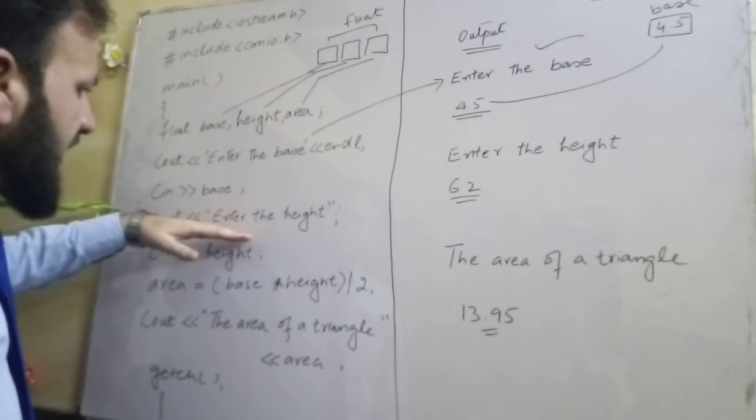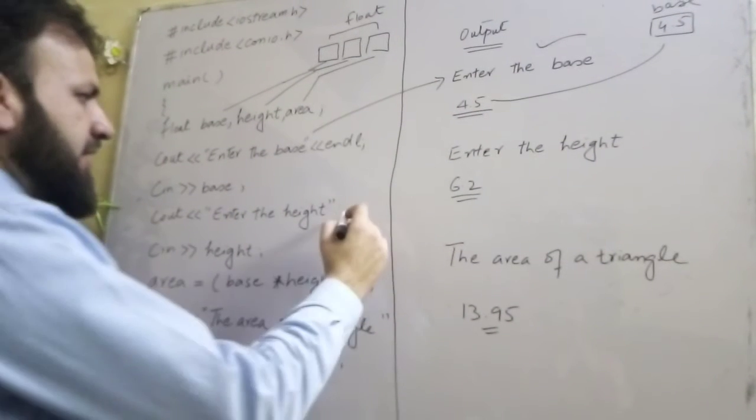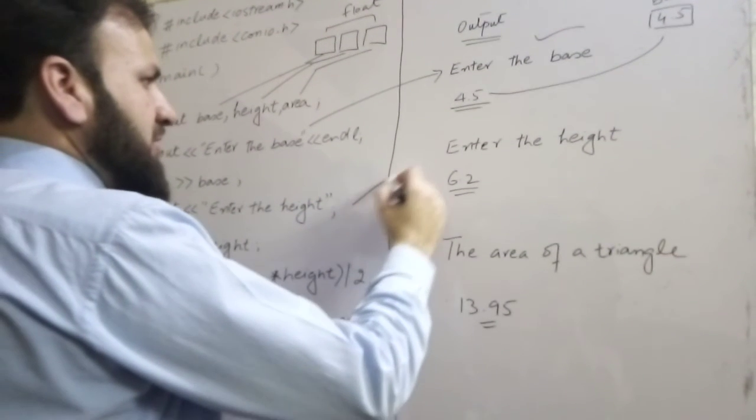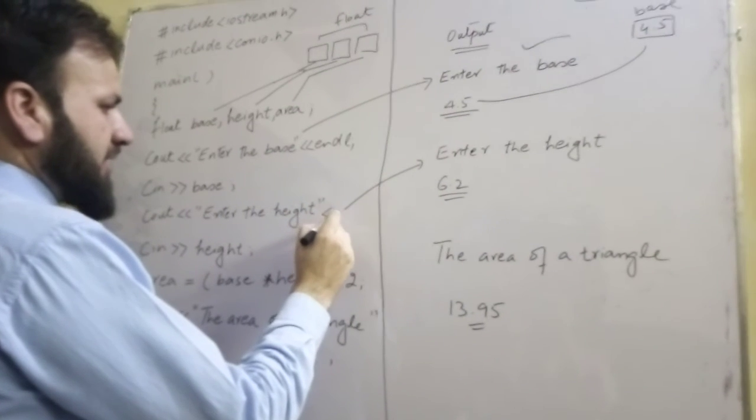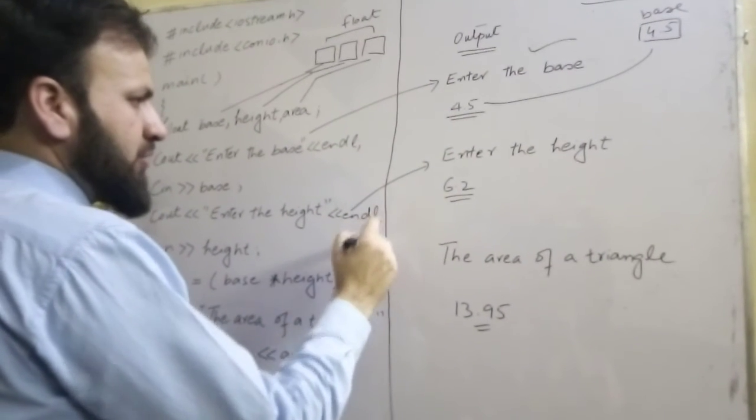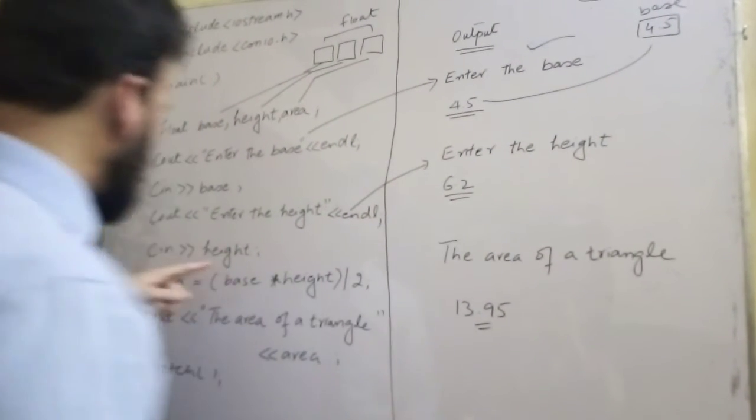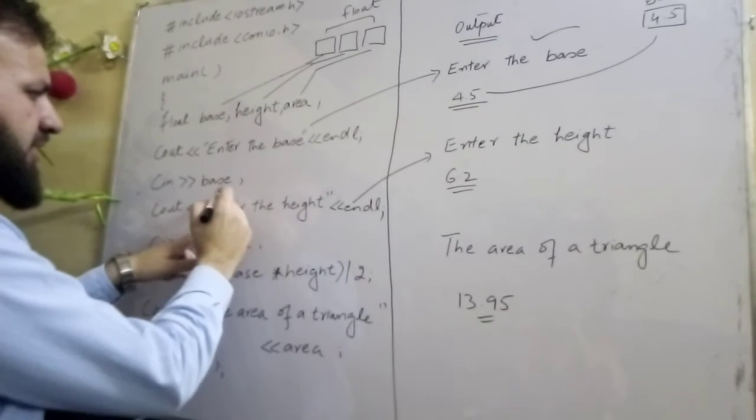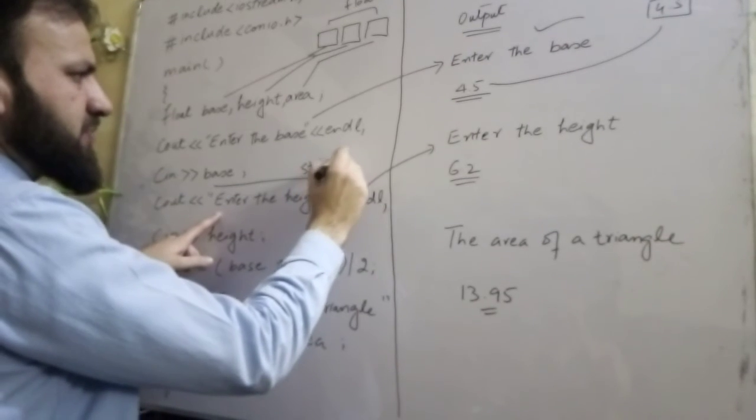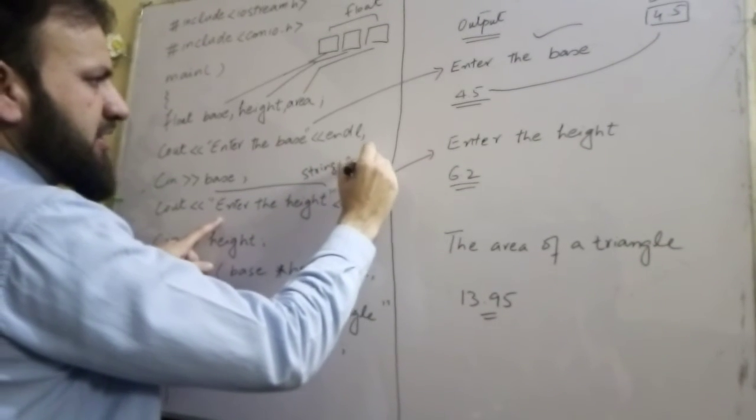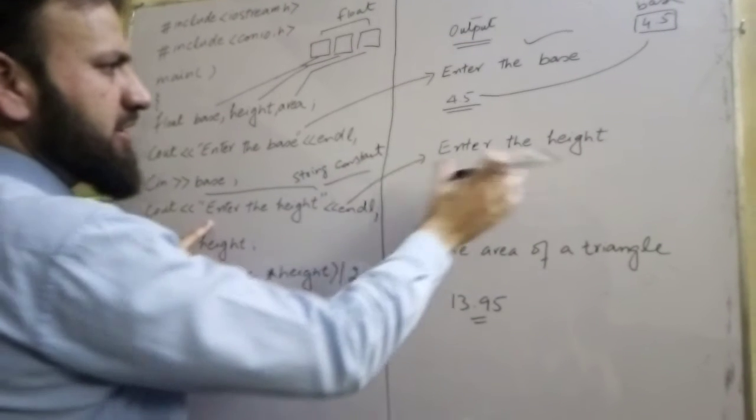Next, cout enter the height. As it is displayed, enter the height. Here we can enter the endl so that we can enter the next line. Now the string constant is displayed as it is. We can enter the height using cin.